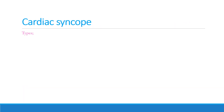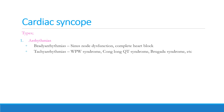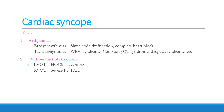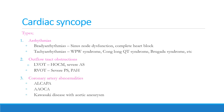Cardiac syncope is of three types. First are arrhythmias, which can be bradyarrhythmias like sinus node dysfunction and complete heart block, or tachyarrhythmias like Wolff-Parkinson-White syndrome, congenital long QT syndrome, and Brugada syndrome. Second are outflow tract obstructions — left-sided examples include hypertrophic obstructive cardiomyopathy and severe aortic stenosis; right-sided examples include severe pulmonary stenosis and pulmonary arterial hypertension. Third are anomalous coronary artery origins, such as anomalous left coronary artery from the pulmonary artery and anomalous aortic origin of the coronary artery.